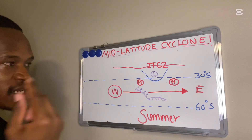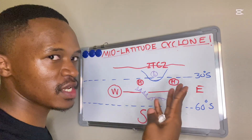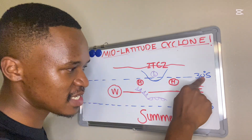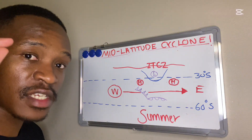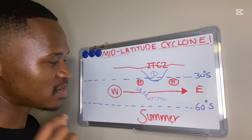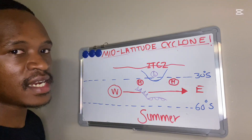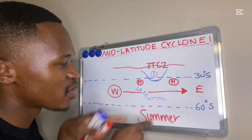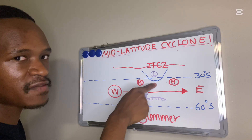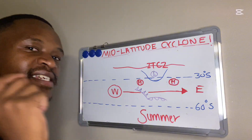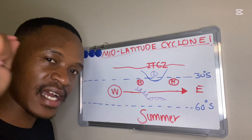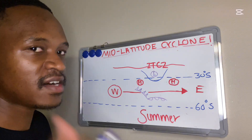The directional movement is from west to east or eastwards. Mid-latitude cyclones occur between 30 to 60 degrees and they occur throughout the year, but they only affect South Africa in winter. In summer, the cyclone is far away from South Africa and has no effect, because of the position of the ITCZ — the Inter-Tropical Convergence Zone.